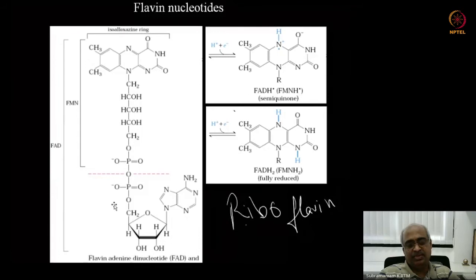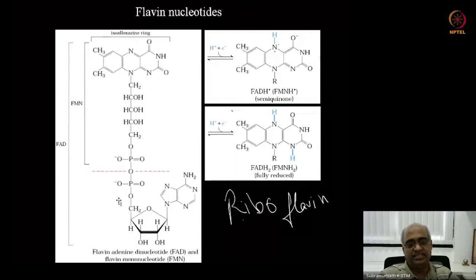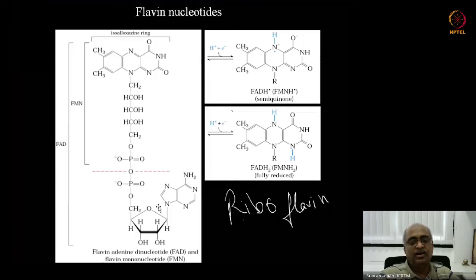This makes flavin nucleotides a good example of a prosthetic group — a cofactor tightly bound to the enzyme rather than loosely bound. NAD is loosely bound: it can get reduced at one enzyme's active site and then freely diffuse out to participate in another enzymatic reaction. Flavin nucleotides don't do that; they temporarily hold electrons in the active site when electrons are taken from or donated to a substrate.